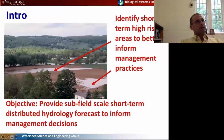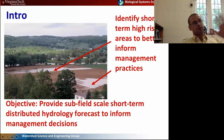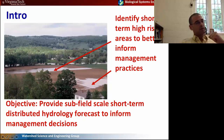What we're trying to do is identify these short-term high-risk areas so that we can actually increase the nutrient management flexibility for producers. So if they know that four days in the future a rainfall event is going to saturate these two areas of their field, well, we're not going to apply manure there. Perhaps we can move to a different field that isn't saturated. Really, we're trying to provide sub-field scale short-term distributed predictions to inform these nutrient management decisions.